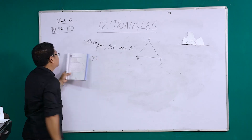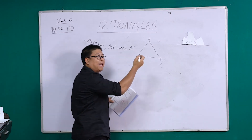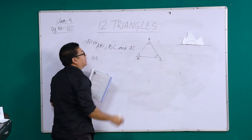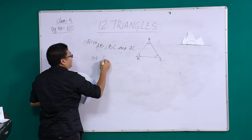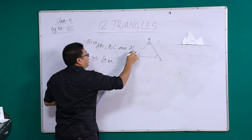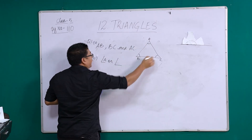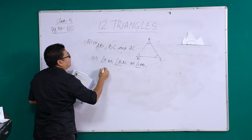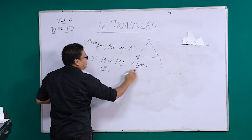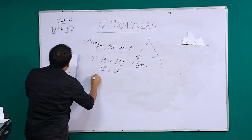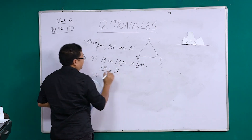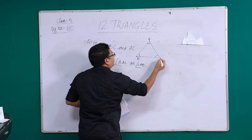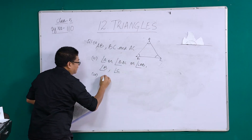Question number two asks us to identify the angles of the triangle. We mark the first angle, the second, and the third. We have learned how to name angles. The first angle at A can be named angle A, angle BAC, or angle CAB. The second angle is B, and the third angle is C. You can try naming the angles for B and C. Question number three asks for the vertices of the triangle. These endpoints are called your vertices, so A, B, and C are your vertices.